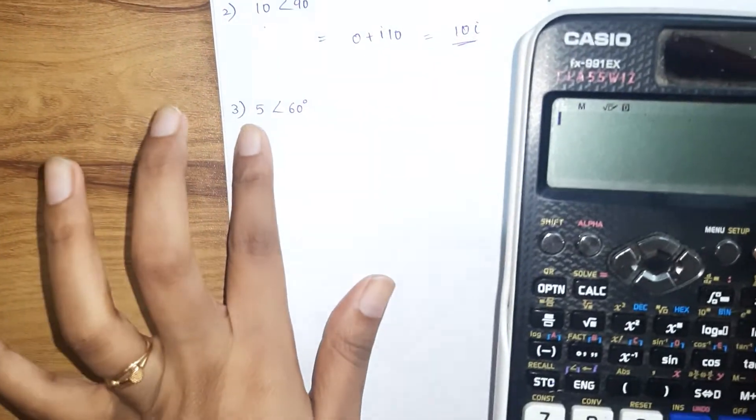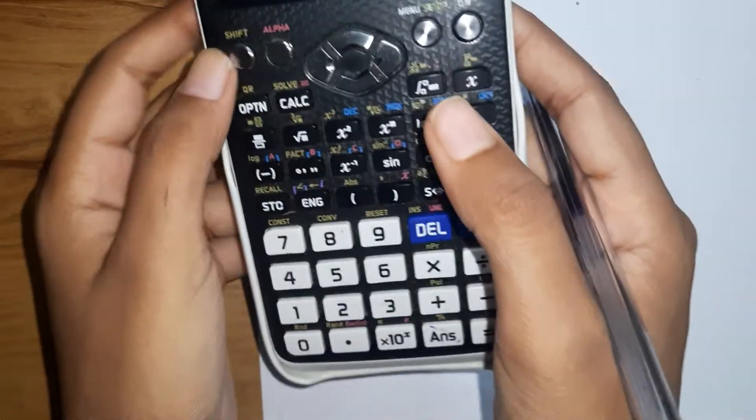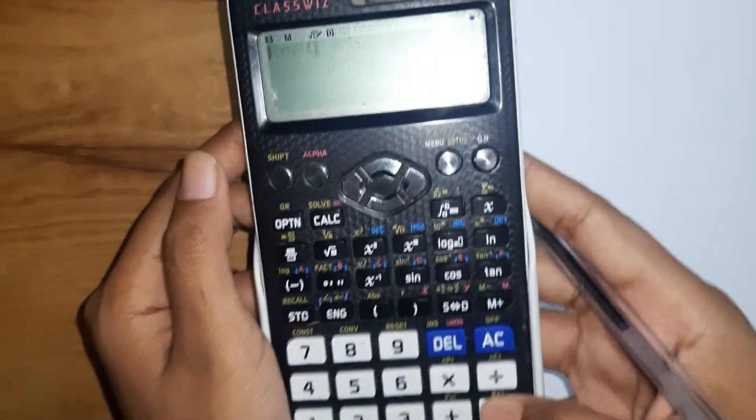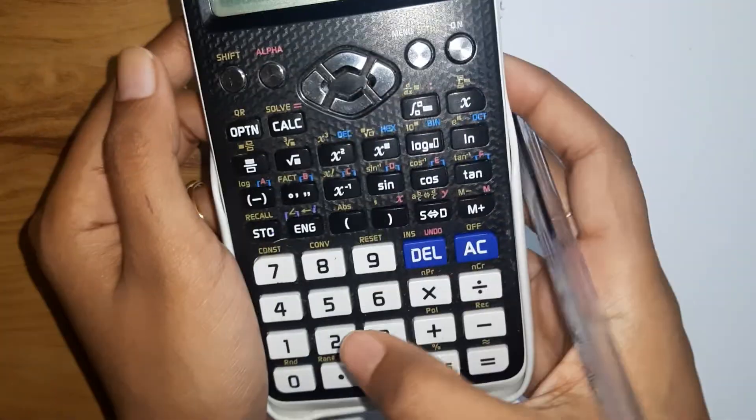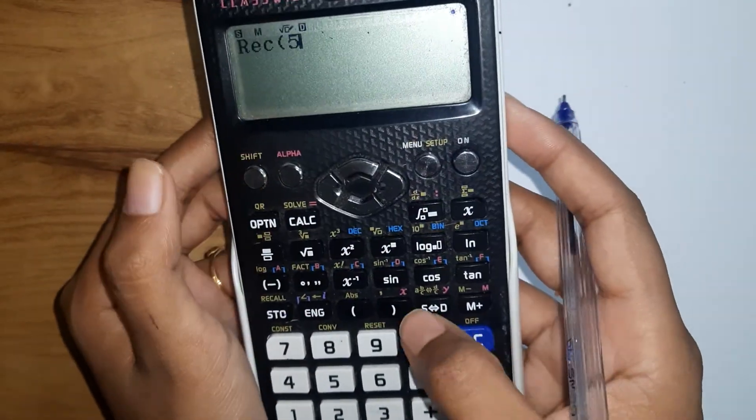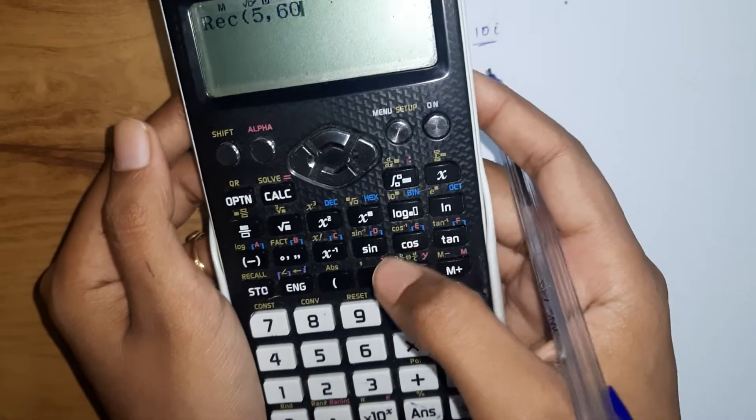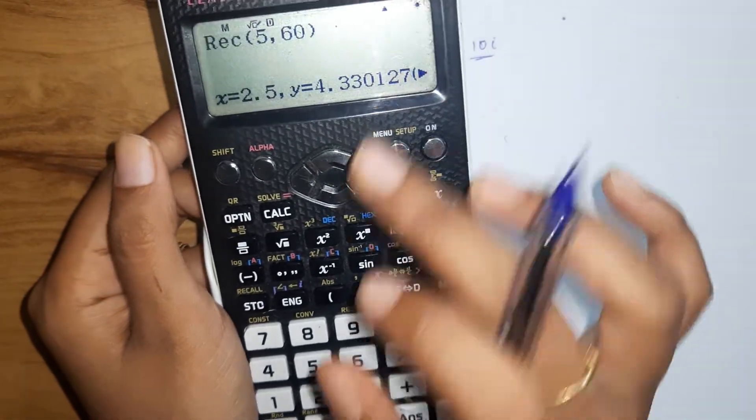Now this is 5 and 60 degrees, right? So how will you do that? Same thing. Shift rect. Write 5, comma, 60 degrees. 5, shift, this one bracket, you will get comma again. 60 degrees. There you go, you got your answer.